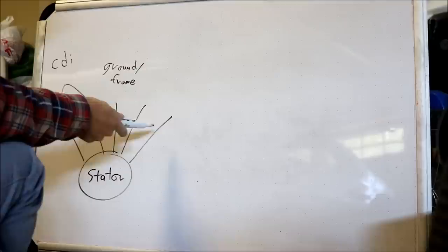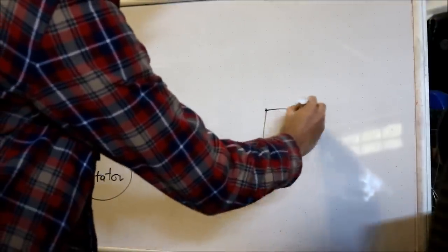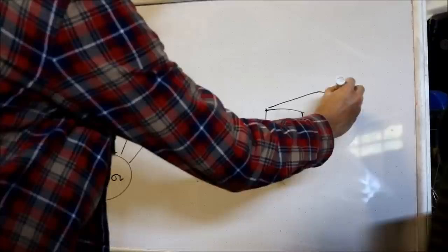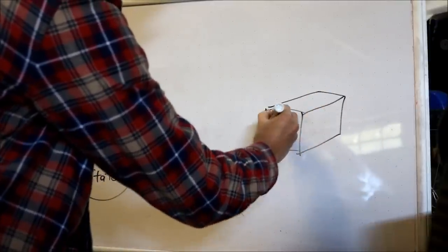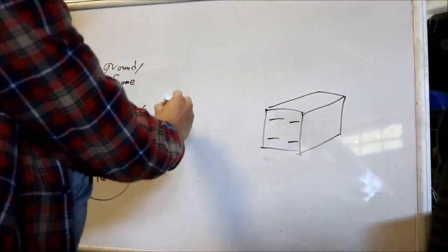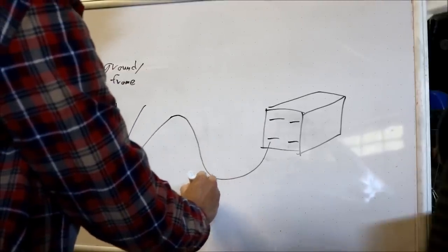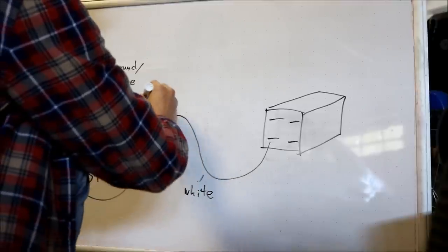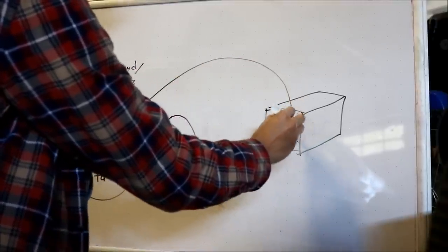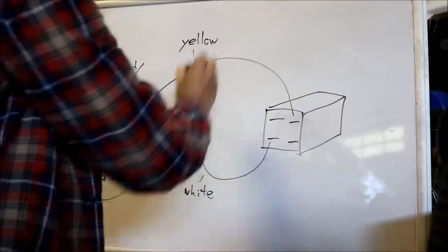So you're going to connect the yellow and the white wire to the rectifier regulator. So the white is connected to the bottom left and the yellow is connected to the top right.